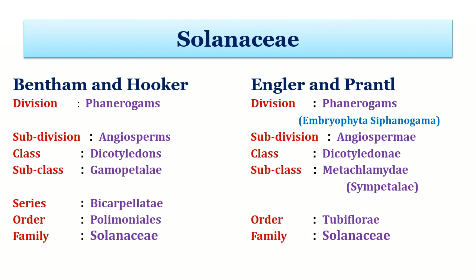This is the systematic position for Family Solanaceae as per the Bentham-Hooker and Engler-Prantl System of Classification. Unlike Engler-Prantl, Bentham and Hooker had proposed series Bicarpellatae as an intermediate taxon between subclass and order. To understand the difference between both systems, look at the different suffix used after the name of the taxon. Also, both systems proposed different names for the subclass and order.